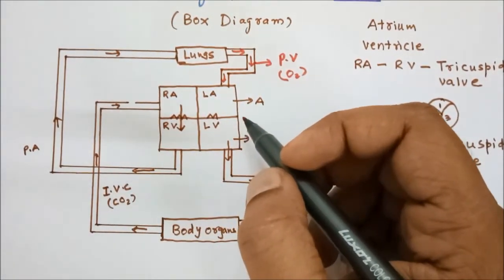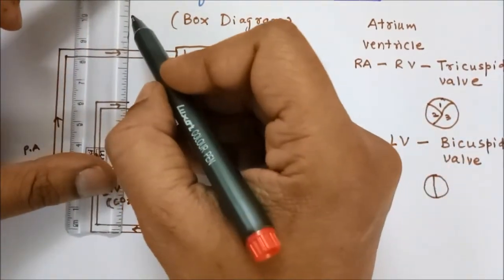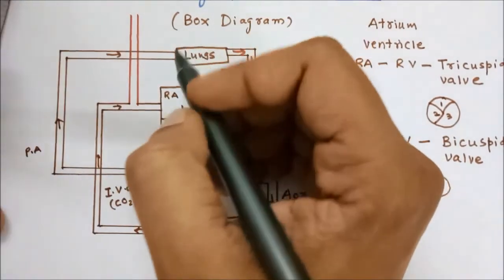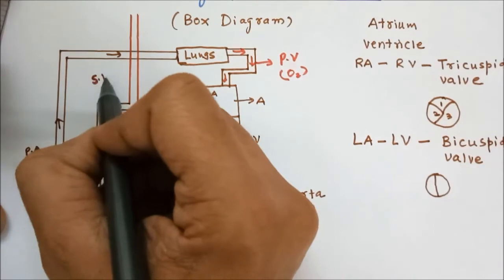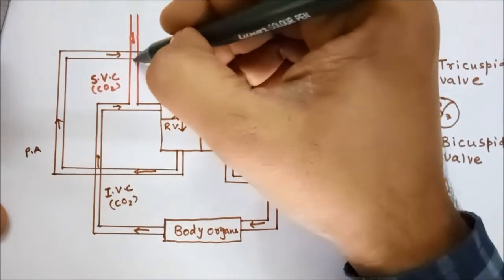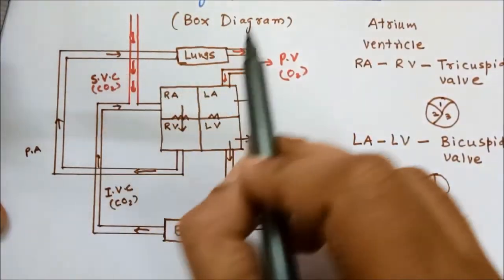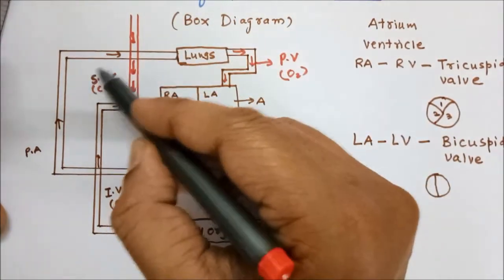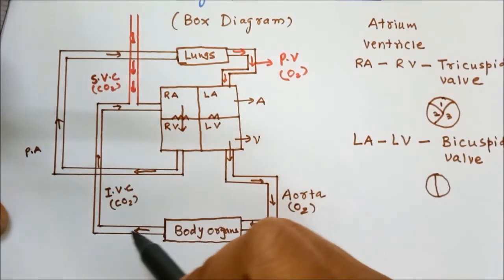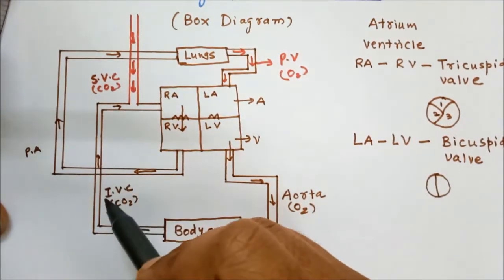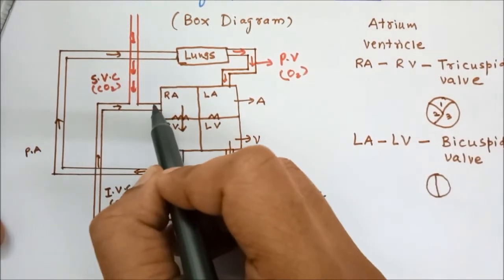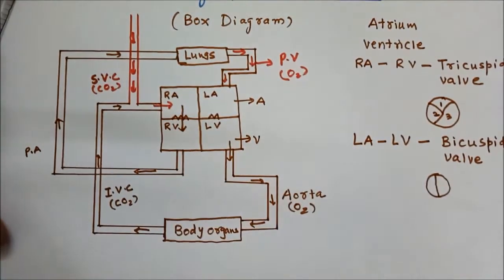There is another vein coming from the upper body organs called the superior vena cava, which also contains deoxygenated blood. Deoxygenated blood from the upper body is collected via the superior vena cava, while the inferior vena cava collects it from the lower body. Both join together and pour deoxygenated blood into the right atrium.